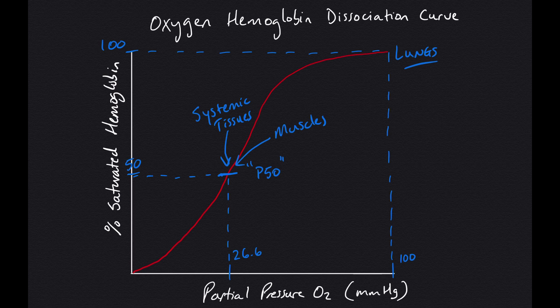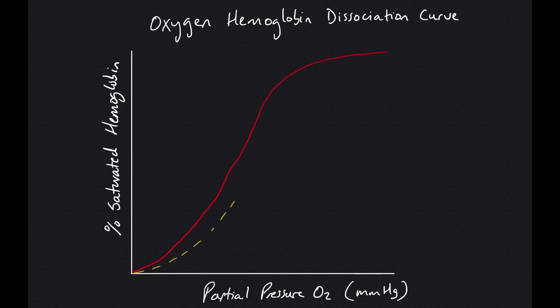So let's dive into what happens when we have a right or left shift of this curve. So what is causing this rightward shift? It's a reduction in our affinity for oxygen by the hemoglobin molecules. This is caused by physiological states that are increasing our need for oxygen at the systemic tissue or muscle. So let's review what they are.